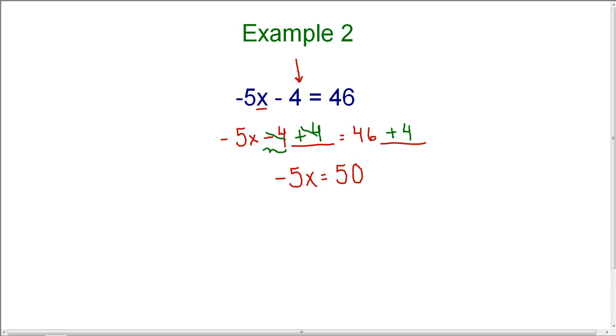Now I'm down to one step in order to get the variable by itself. I need to get rid of its coefficient, which is negative 5. Since this means negative 5 times x, I can do the opposite of multiply, which is to divide.